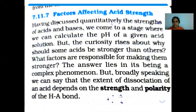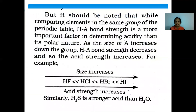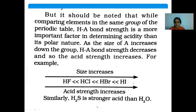Factors affecting acid strength: The extent of dissociation of an acid depends on the strength and polarity of the H-A bond. When comparing elements in the same group of the periodic table, H-A bond strength is a more important factor than polarity. As the size of A increases down the group, H-A bond strength decreases and acid strength increases. For example, going from HF to HCl to HBr to HI, as size increases, acidic strength increases.